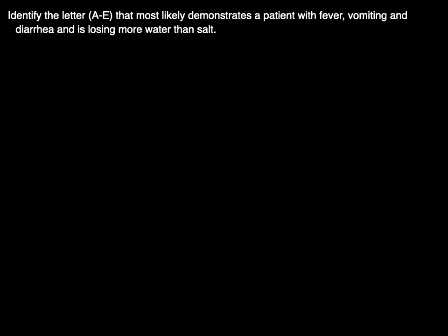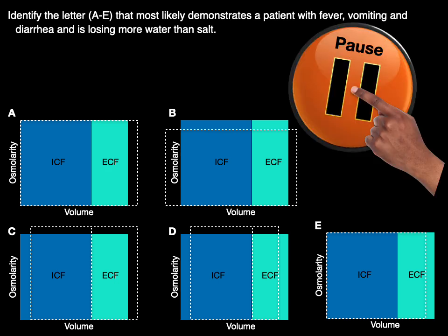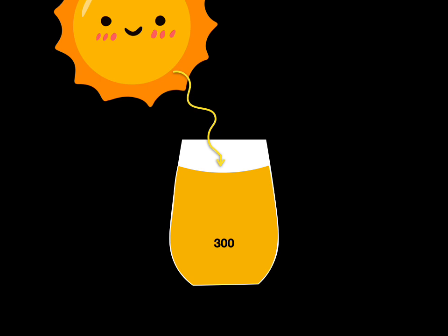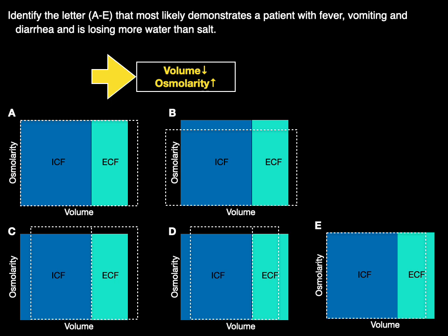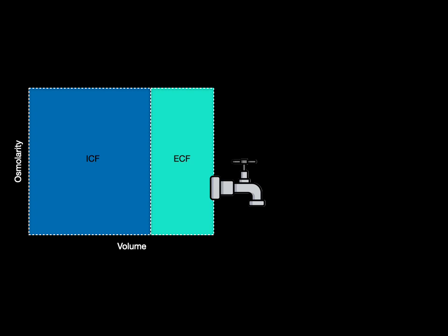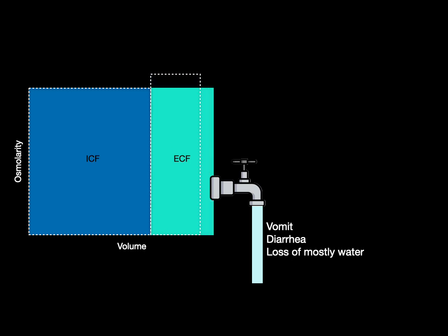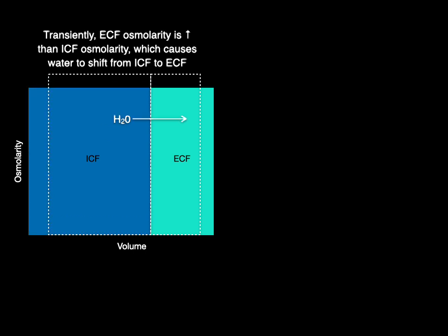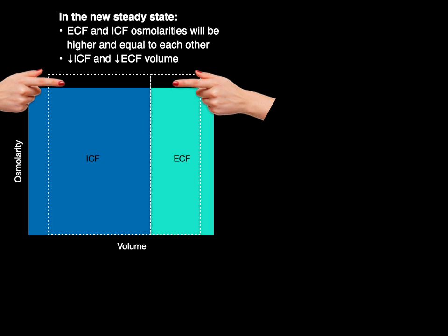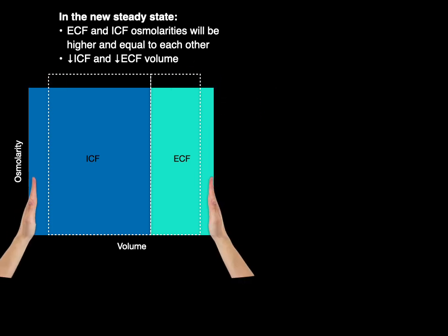Finally, identify the letter that most likely demonstrates a patient with fever, vomiting, and diarrhea who is losing more water than salt. This example is really the orange juice in the sun — we've lost water through evaporation but retain the same amount of solutes, so we've reduced volume but increased osmolarity. Which letter shows this? D shows this. This is like draining fluid from the extracellular compartment — loss of mostly water increases osmolarity. Transiently, extracellular fluid osmolarity is greater than intracellular fluid osmolarity, causing water to shift from intra- to extracellular fluid until osmolarity equalizes. In the new steady state, extra- and intracellular fluid osmolarities will be higher and equal to each other, but we've lost volume in both compartments.